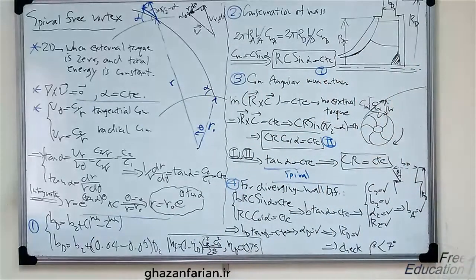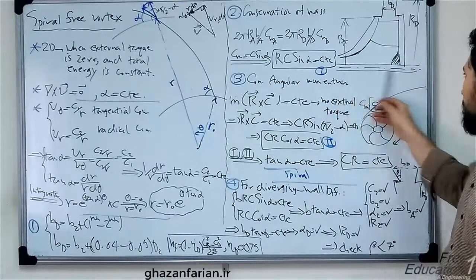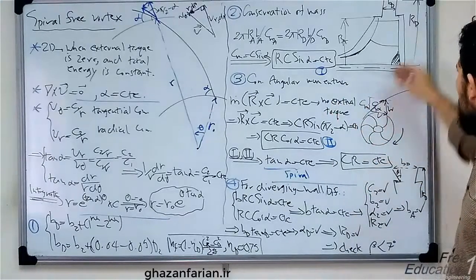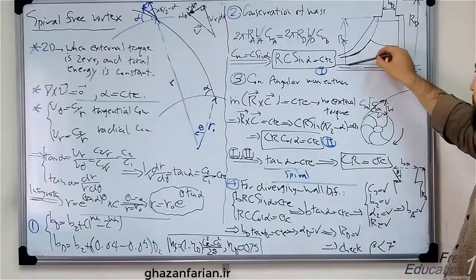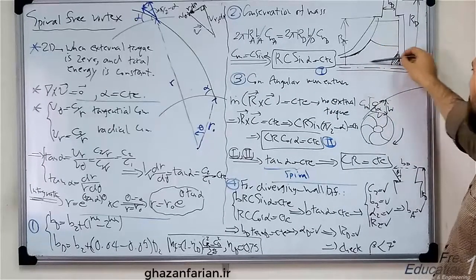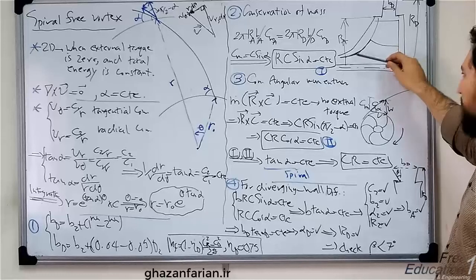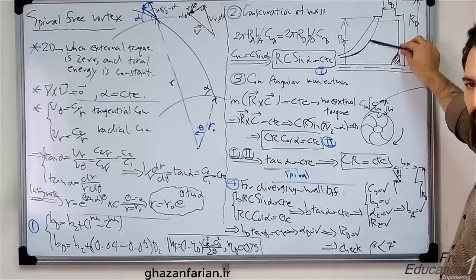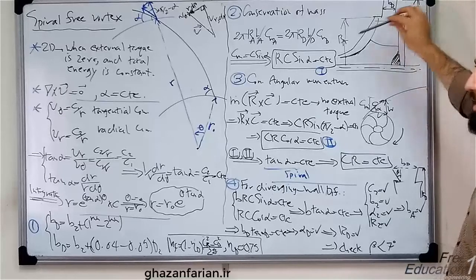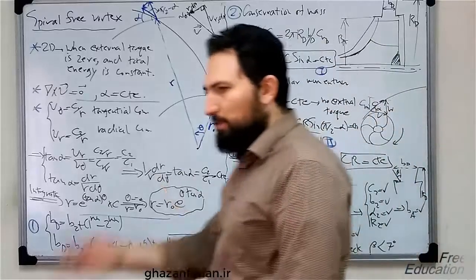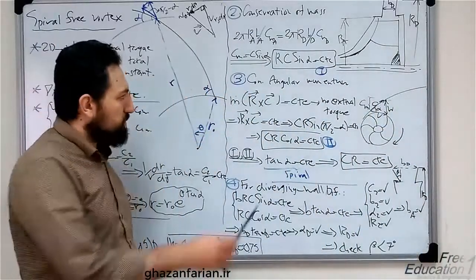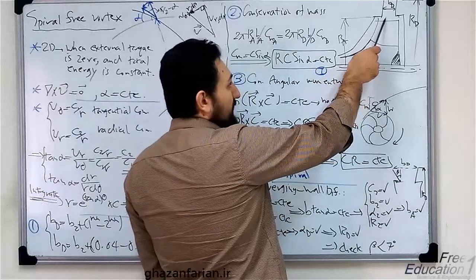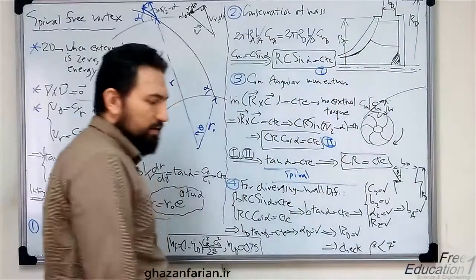This figure shows the schematic view of the pump from the side view or meridional view. This is the axis of the shaft of the pump. This one is the impeller. Here is the eye of the impeller, and this section is the inducer. This section is the leading edge of blades, and here is the trailing edge of the blades or the outlet of the impeller. I want to place a diffuser at the output of the impeller.